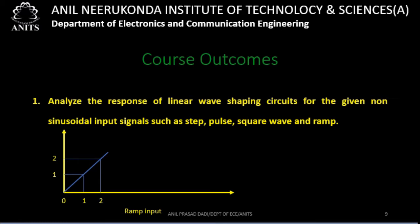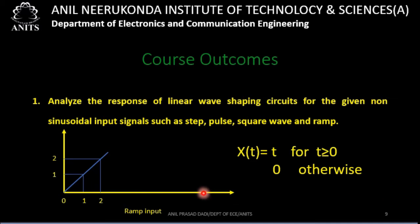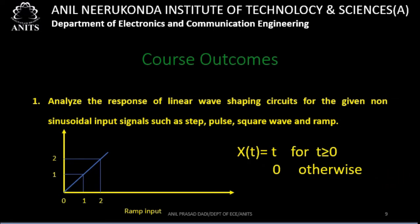The next input signal is a ramp input signal. Its mathematical representation is x(t) = t for t ≥ 0, and 0 otherwise. So for t = 1, the input is 1; for t = 2, the input is 2, and so on. This is the mathematical representation of the ramp signal.